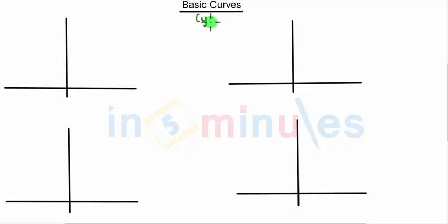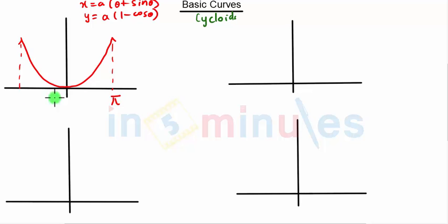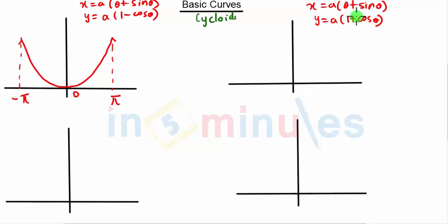After that, we have curves known as cycloids. The equations of cycloids are represented parametrically as x = a(θ + sin θ) and y = a(1 - cos θ). This curve has this point at π, this point at -π, and this at 0. Then we have x = a(θ + sin θ) and y = a(1 + cos θ). Whenever both terms are plus, the curve is something like this.